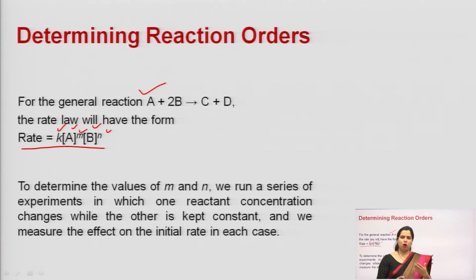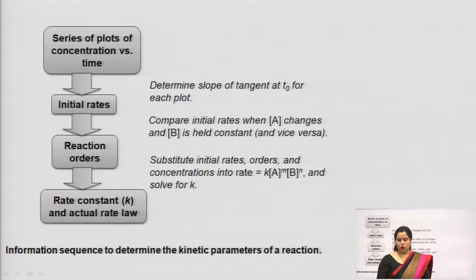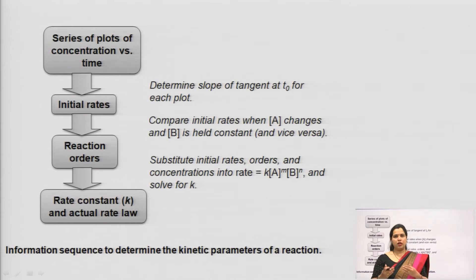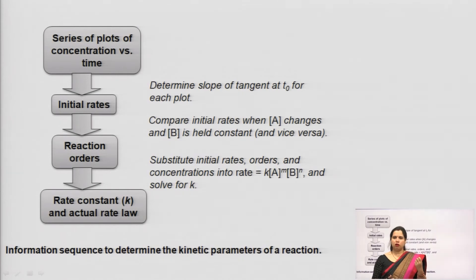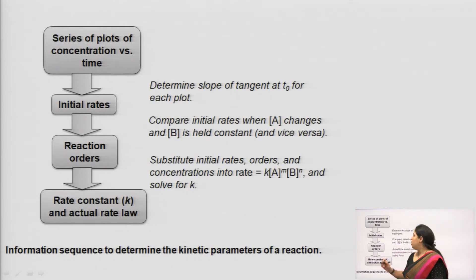Although we have different reaction conditions for different substrates, to determine the reaction orders we run a series of experiments and observe how many reactants are participating to get the desired product. Graphically, it can be represented as a series of plots of concentration versus time — concentration change with respect to time is the rate of reaction. The hierarchy we follow is: run experiments, identify initial rates, then reaction orders, then rate constant, and finally the actual rate law.